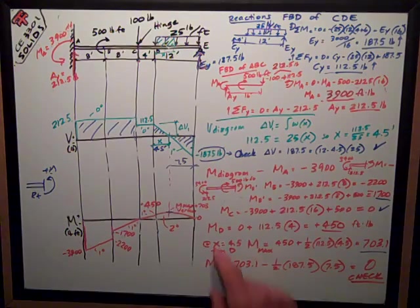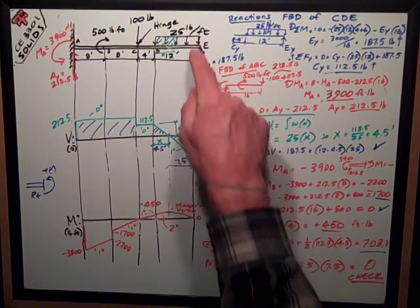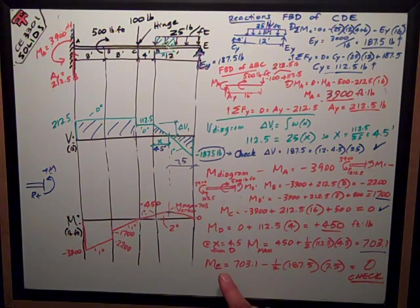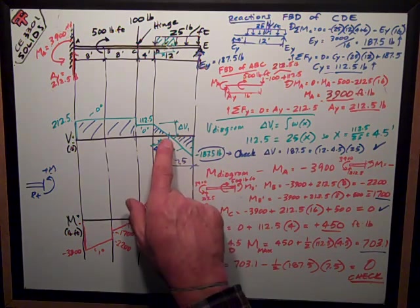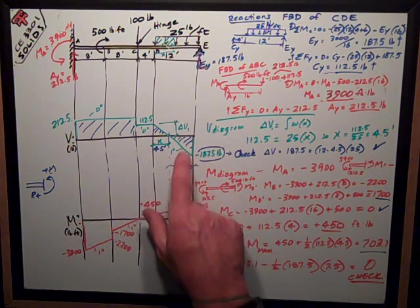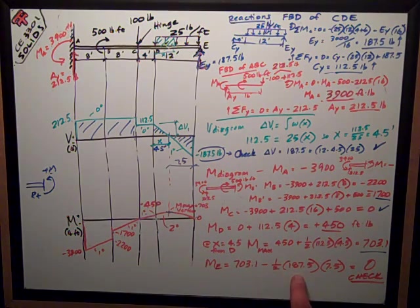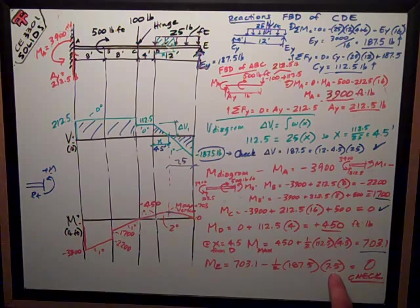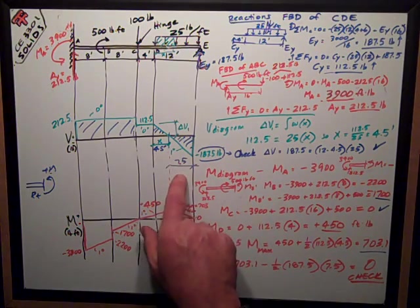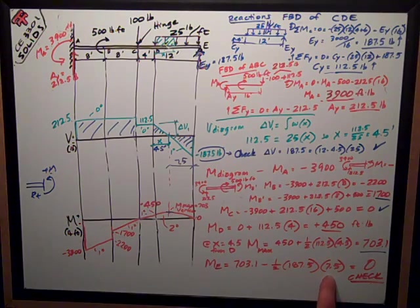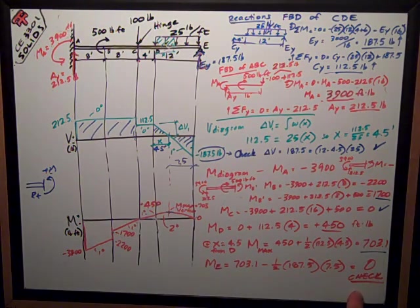Finally, I have a check. My moment diagram should close to zero because at the end of that beam, that roller, I shouldn't have a moment. And I check that 703.1 is equal to the area under this little triangle, part of the shear diagram. The area of that's one half, 187.5 times its base of 7.5 feet, which is just 12 minus 4.5. That does equal to zero, so it checks out.